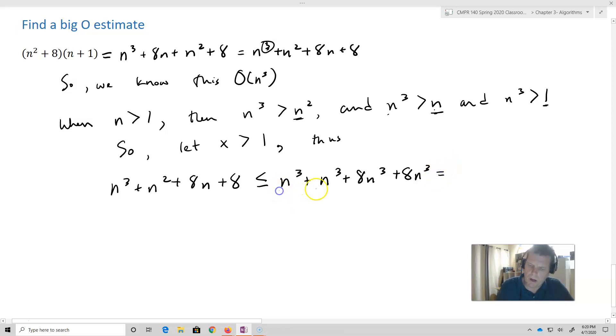This is going to equal 1, 2, 10, 18, 18n³. So our function, n³ + n² + 8n + 8, is less than or equal to 18n³.